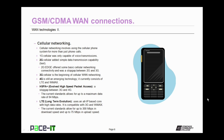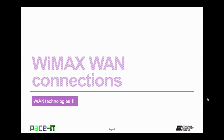HSPA+ is not quite as good as LTE, which stands for long-term evolution. LTE uses an all-IP based core with high data rates. LTE is compatible with both 3G and WiMAX. The current standard for LTE allows for up to 300 megabits per second in download speeds and up to 75 megabits per second in upload speeds.